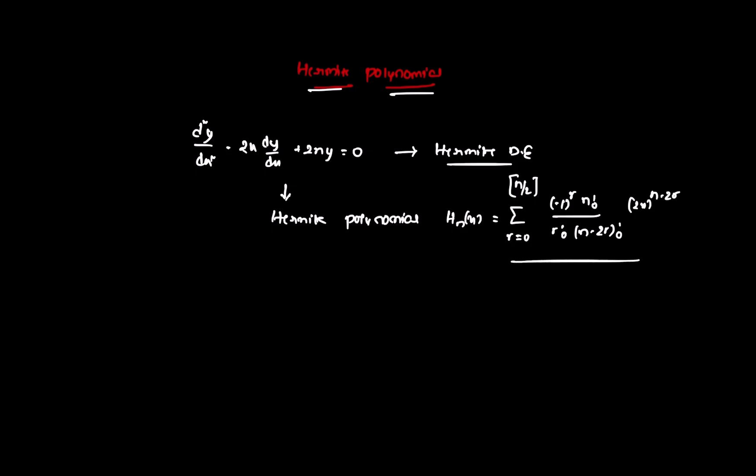Let me write the Hn(x) value more clearly. The Hn(x) value is equal to the summation from r = 0 to the integral part of n/2 of: minus 1 to the power r, times n factorial divided by r factorial times (n minus 2r) factorial, times (2x) to the power of (n minus 2r).